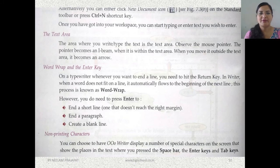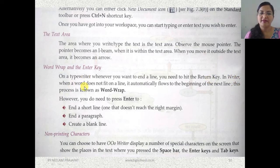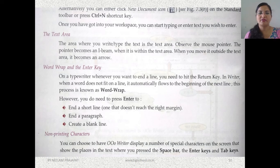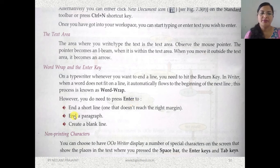Word wrap and the Enter key: on a typewriter, when you want to end a line, you have to hit the return key. But in Writer, when a word does not fit on a line, it automatically flows to the beginning of the next line — that is word wrap. You don't need to press Enter for that. However, if you are writing a short line or want to end a paragraph, you can press Enter. You can also press Enter to create a blank line.